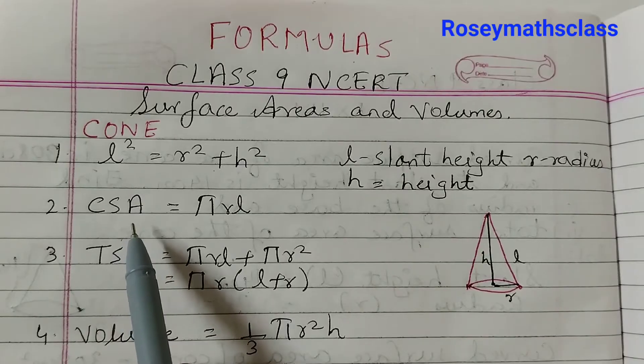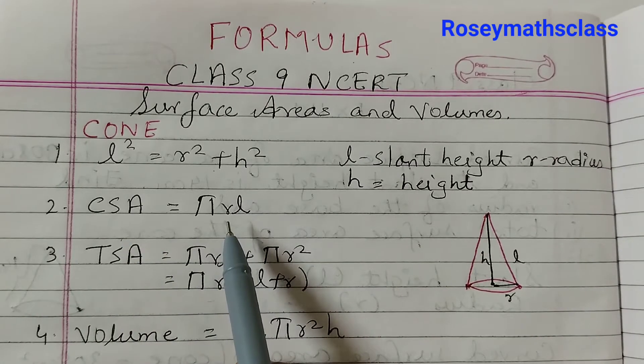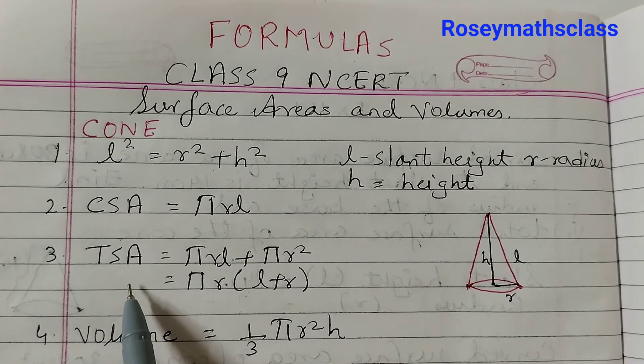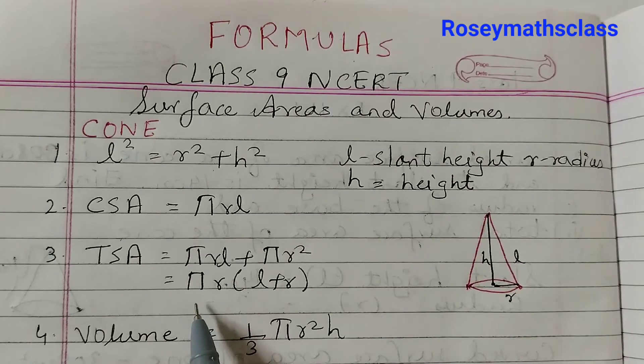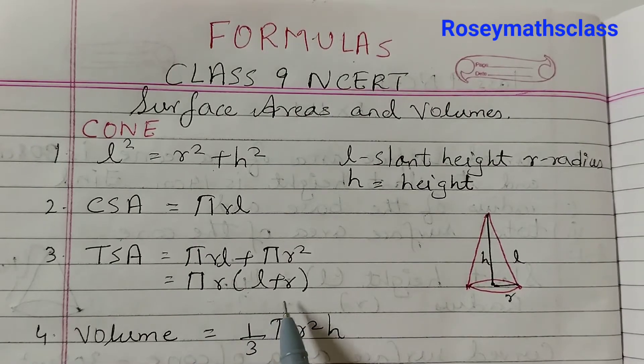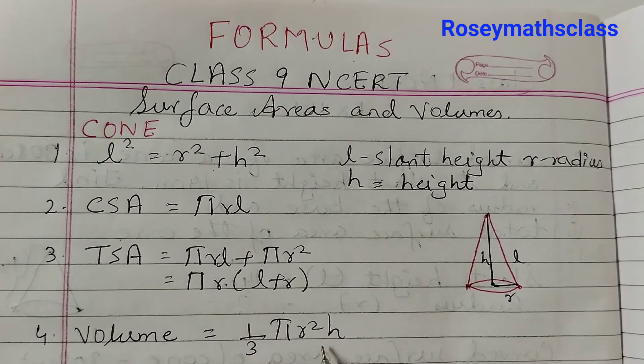Curved surface area is equal to pi R L, where the base area is not included. Total surface area is pi R L plus pi R squared. Simplified, it would be pi R times L plus R. Volume of a cone is one-third pi R squared H.